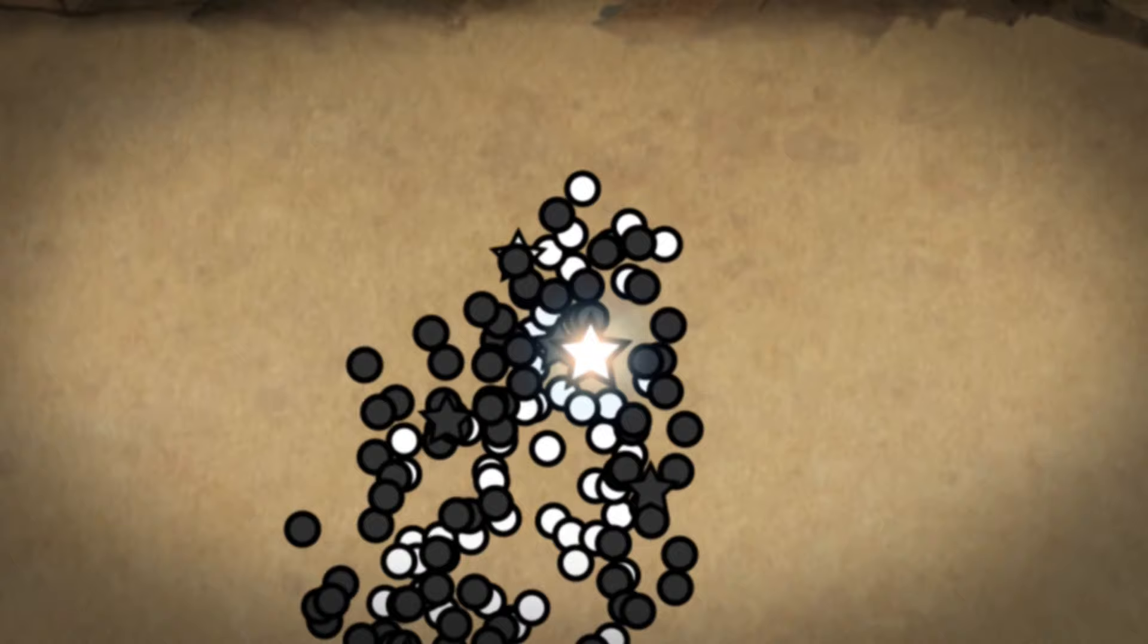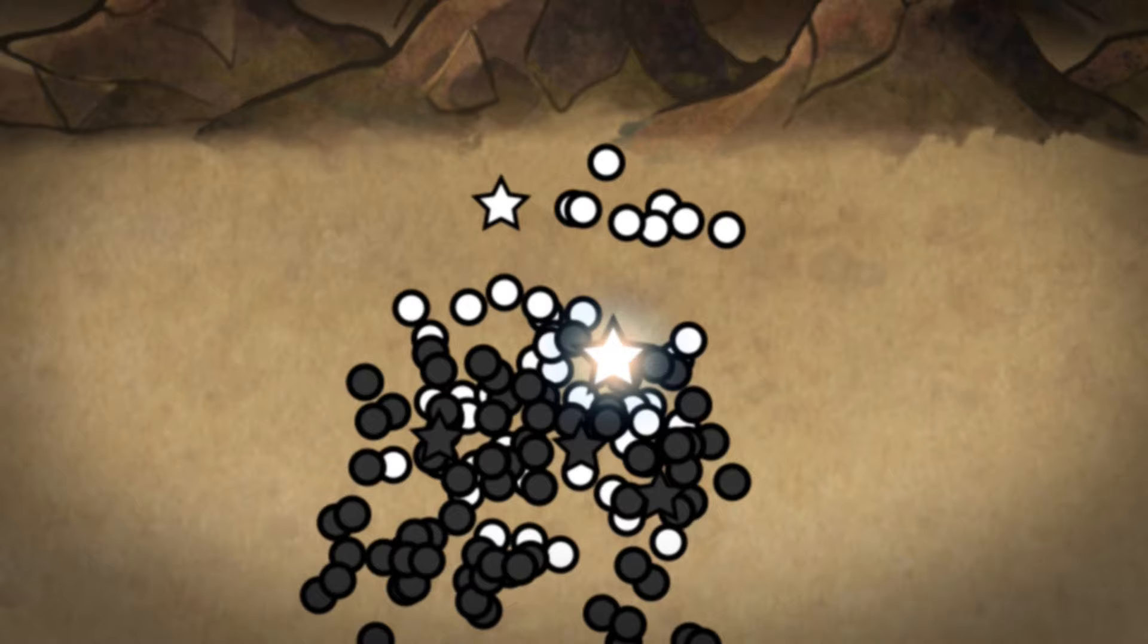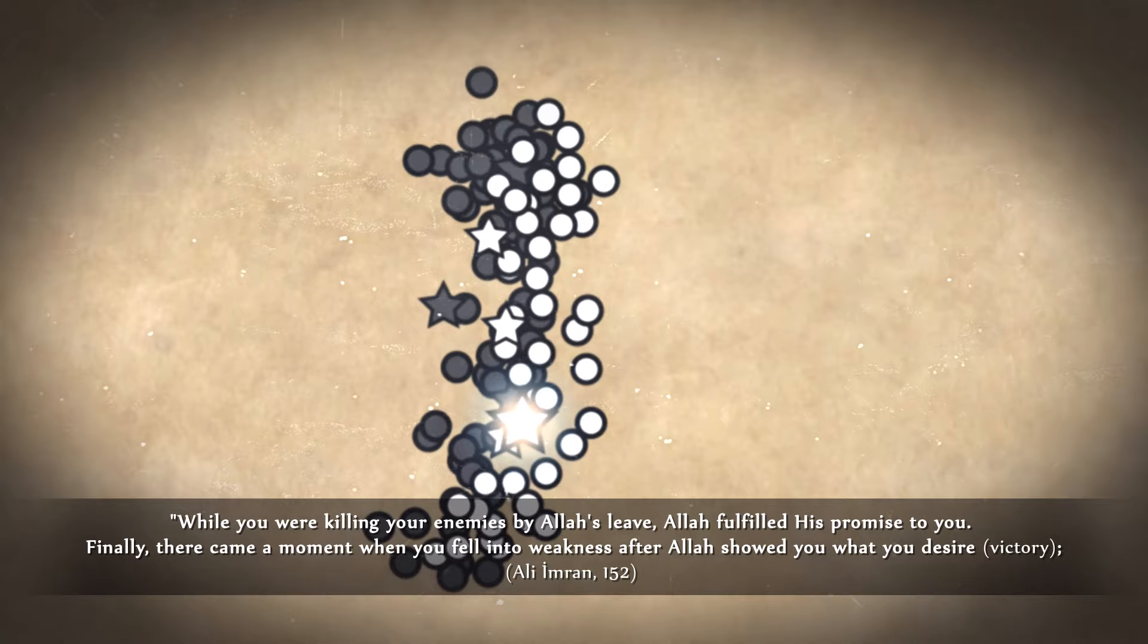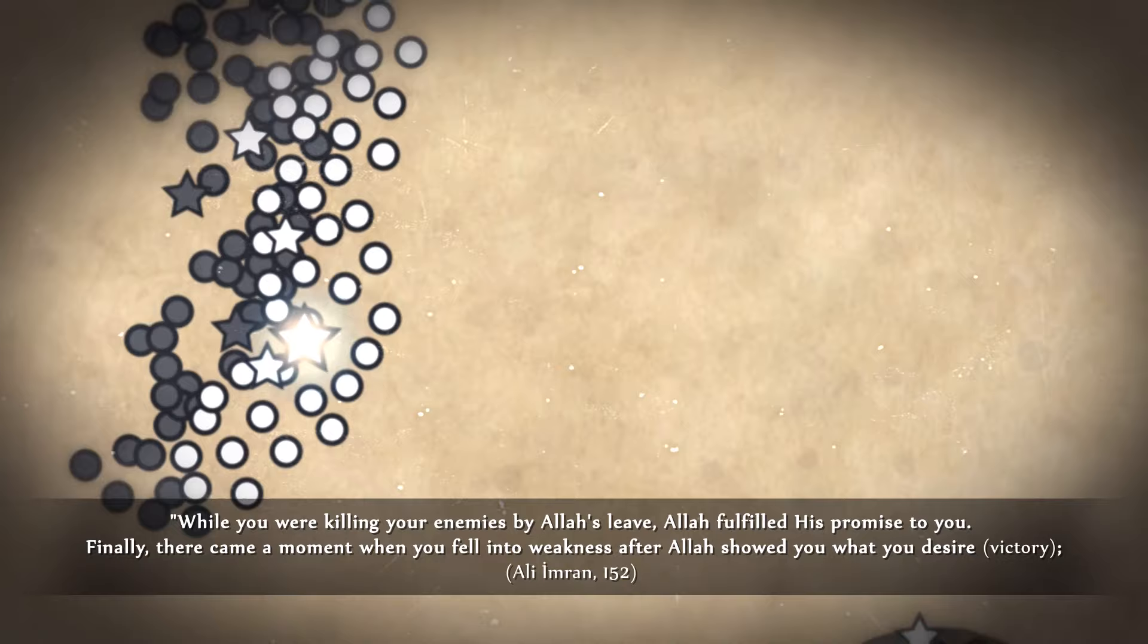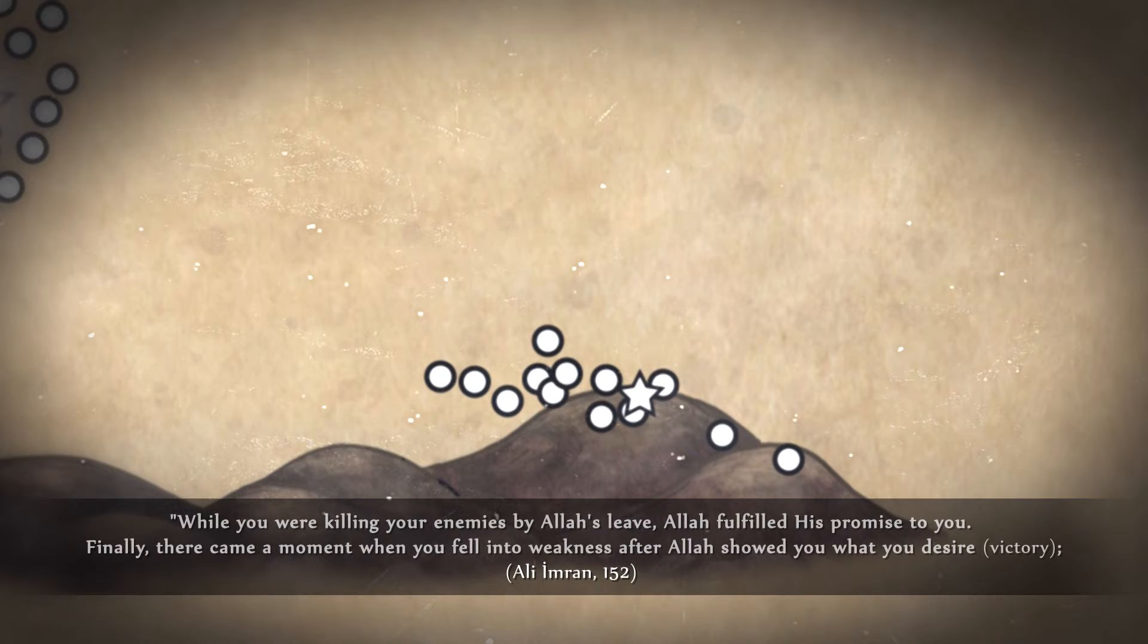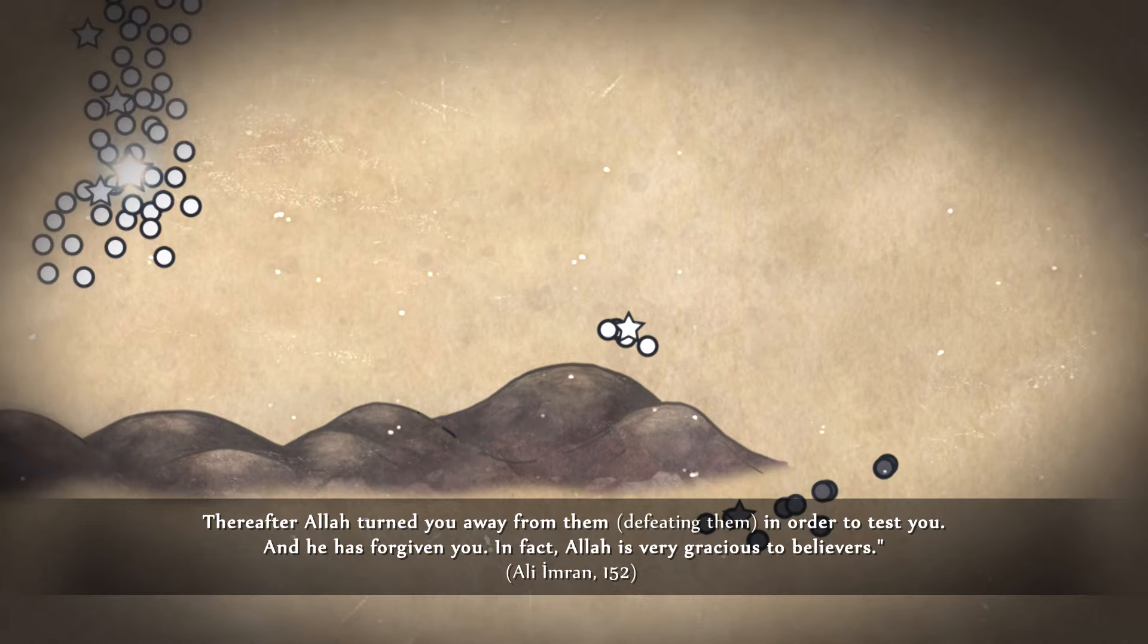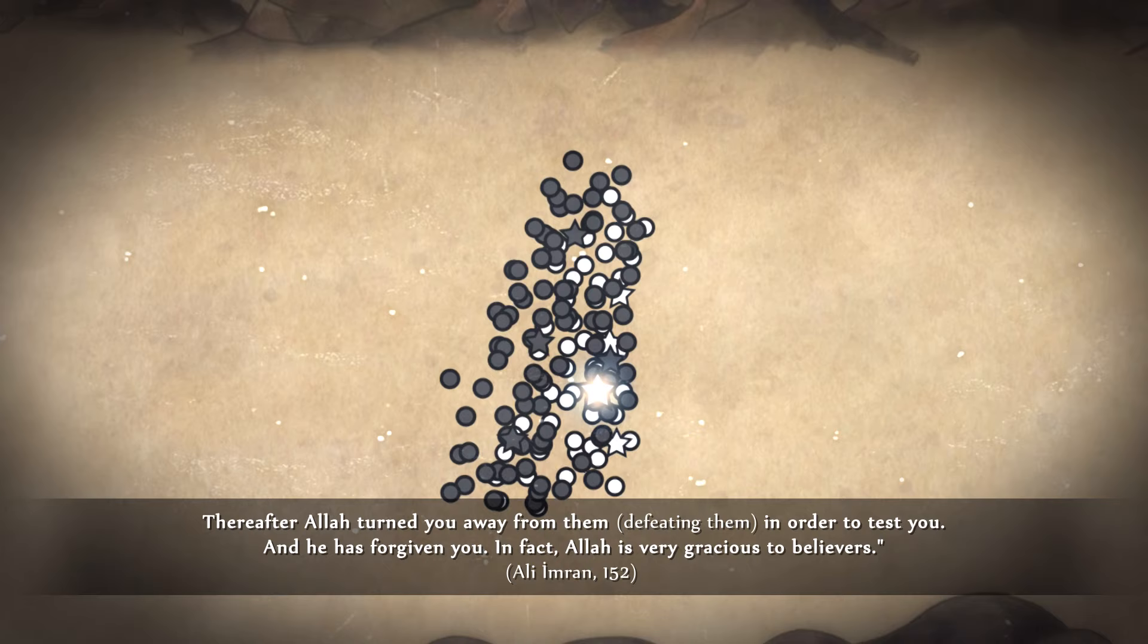The Islamic army began to retreat towards Mount Uhud. The messenger of Allah said: O servants of Allah, come to me, I am the messenger of Allah. Allah ta'ala declares this situation as follows: While you were killing your enemies by Allah's leave, Allah fulfilled his promise to you. Finally, there came a moment when you fell into weakness after Allah showed you what you desire. You tried to argue about the order and you became rebellious. There were those who wanted the world and there were those who wanted the hereafter. Thereafter, Allah turned you away from them in order to test you. And he has forgiven you. In fact, Allah is very gracious to believers.